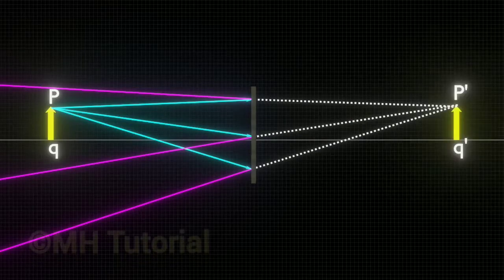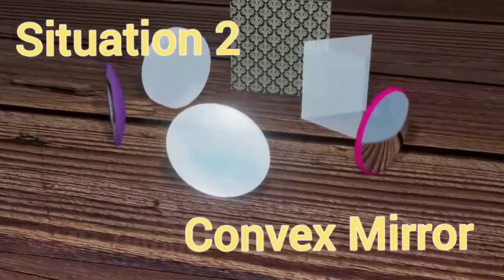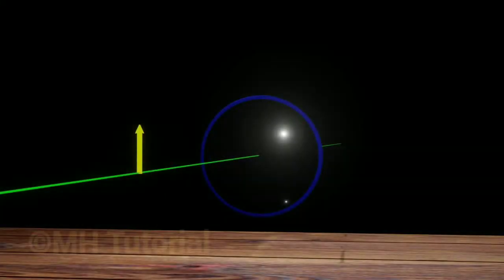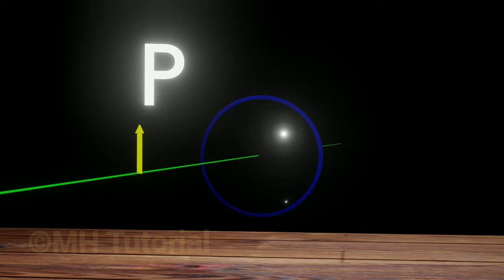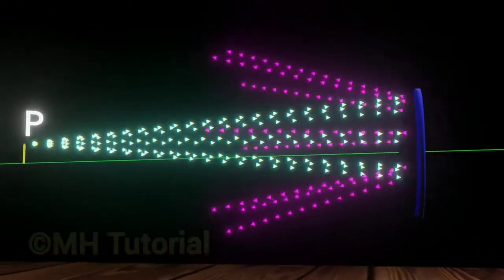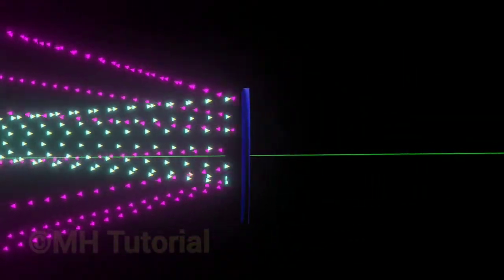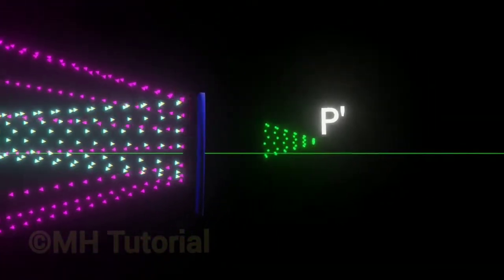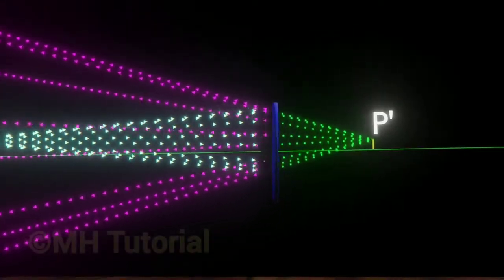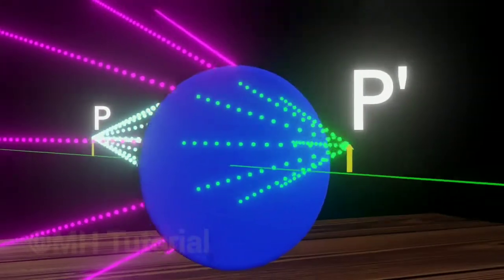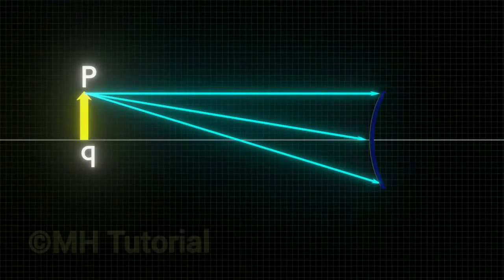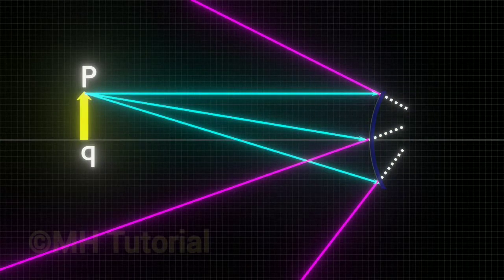Next we will see the path of rays about a convex mirror. An arrow-like object is placed in front of the mirror; the top point is P. The rays of light from point P are reflected back by the mirror, and the reflected rays appear to be coming out of a point P' at the back of the mirror. Therefore the image of point P is formed at point P', and underneath P' a smaller, right-side-up image of the entire arrow is formed.